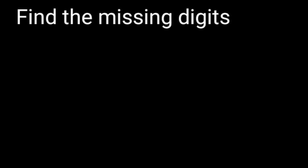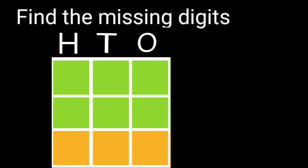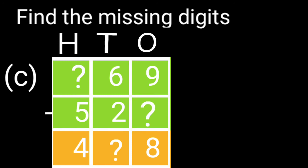Let's do one more question. Question number C. In question number C we have a missing digit at one's place of smaller number. To find that we have to subtract the difference from the digit of bigger number at one's place.